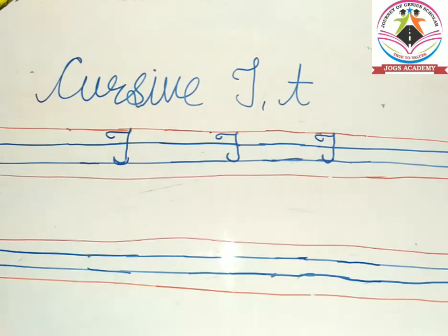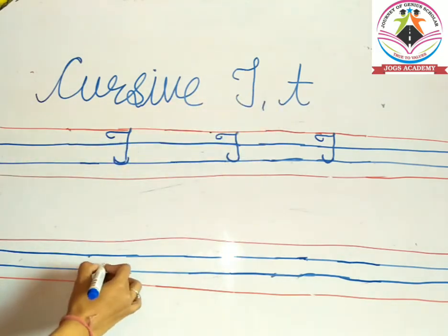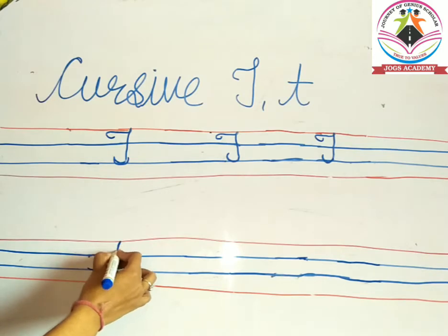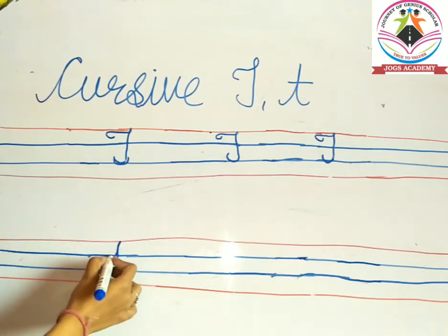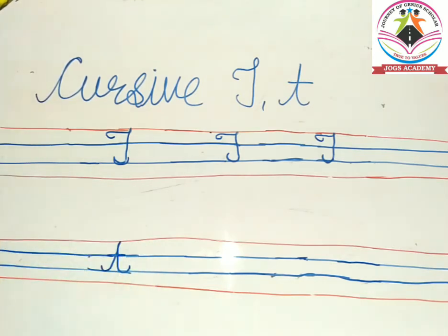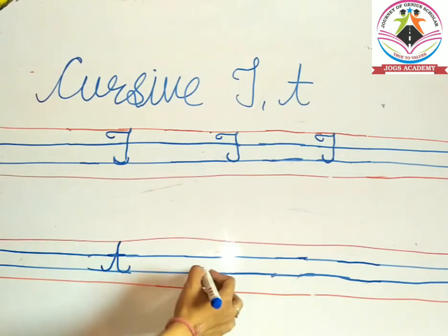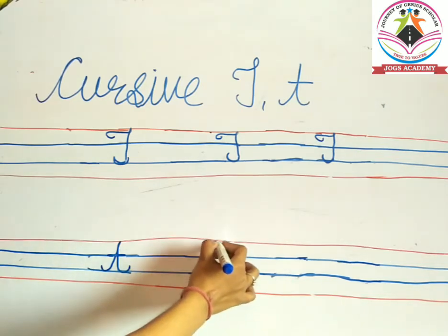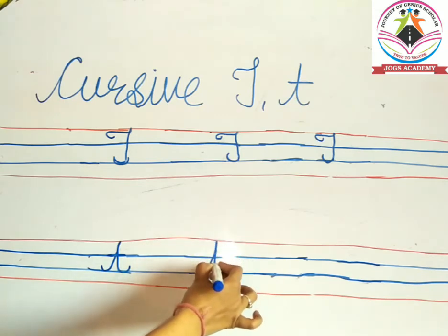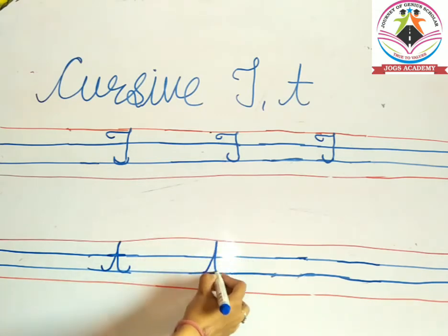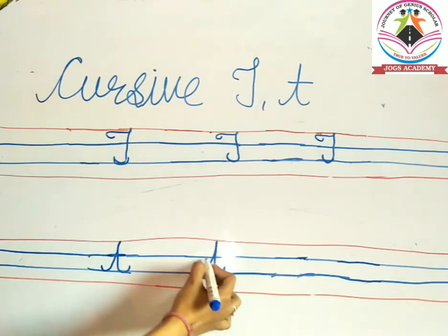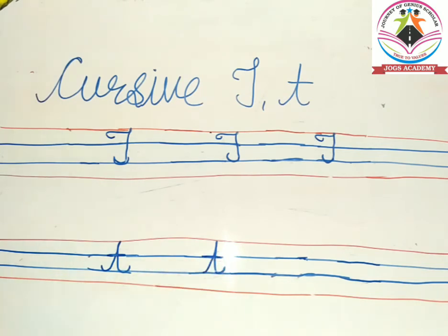Now we will discuss about how to write small cursive t. So firstly we will draw a standing line and again a standing line and make a sleeping line. This is small t. Again, standing line upward, standing line downward and a curve and again a sleeping line.